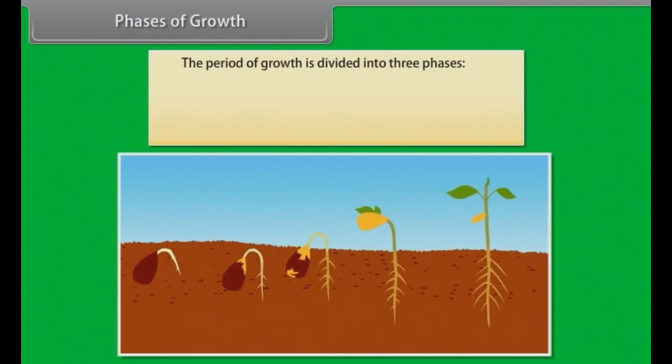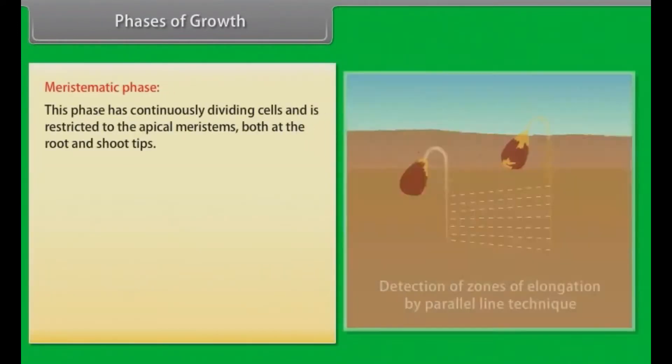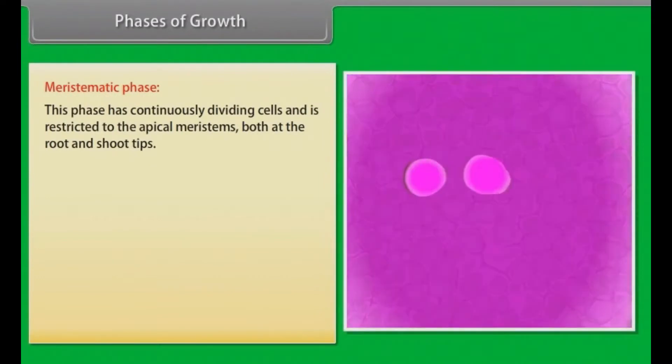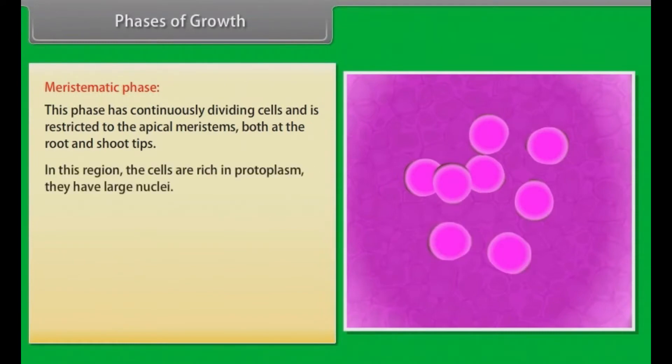Phases of growth. The period of growth is divided into three phases: meristematic, elongation and maturation. Meristematic phase: This phase has continuously dividing cells and is restricted to the apical meristems, both at the root and shoot tips. In this region, the cells are rich in protoplasm. They have large nuclei.